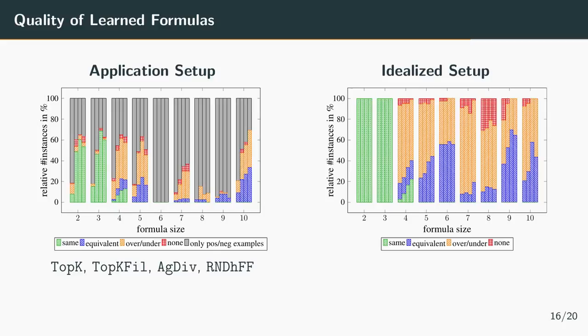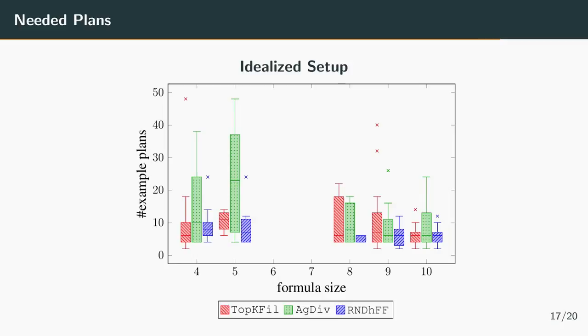Here we analyze the number of plans necessary to either learn the same or an equivalent formula for the idealized setup. Overall the random plan generation performs best and on average the number of plans necessary to learn the same or an equivalent formula is below 10, which should be a feasible number for the user to annotate.